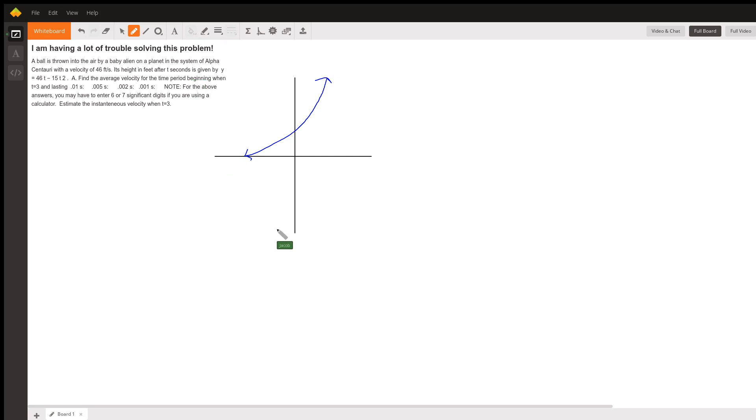Average velocity—bar over something means average—average velocity is your change in position over your change in time. When I say change in x, that's sometimes given as position, could be x, could be s. In this case it's actually going to be height because we're given the height of this baby alien as a function of time. So for us that's going to be h, and what we care about in terms of velocity is how fast is that height changing over time, so that's delta h over delta t.